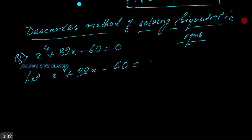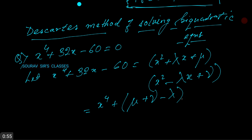equal to x squared plus lambda x plus mu into x squared minus lambda x plus mu, which equals x to the power 4 plus mu plus nu minus lambda squared into x squared plus lambda into mu minus nu x plus mu nu.